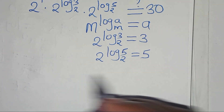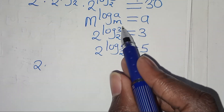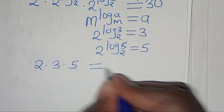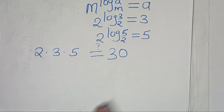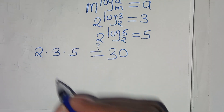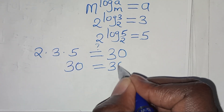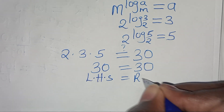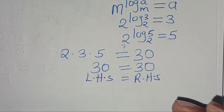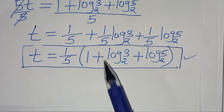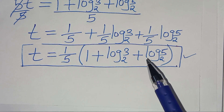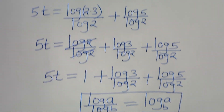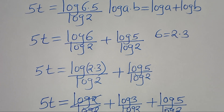Substituting these, we have 2 times 3 times 5, which is 6 times 5, equal to 30. This confirms that the left-hand side equals the right-hand side. Therefore, the value of t, which is one-fifth times the quantity 1 plus log base 2 of 3 plus log base 2 of 5, satisfies the equation. Like this video and subscribe — see you in the next video.